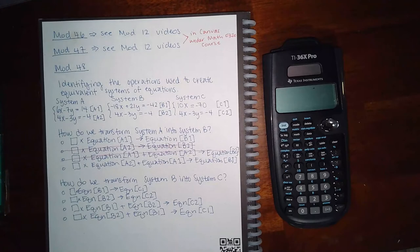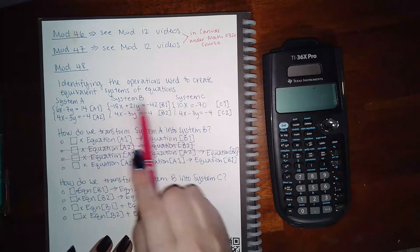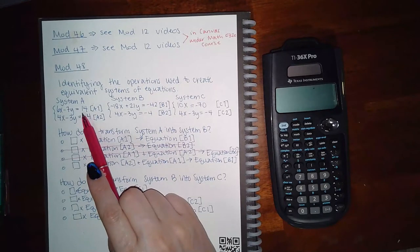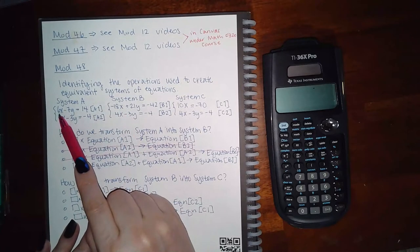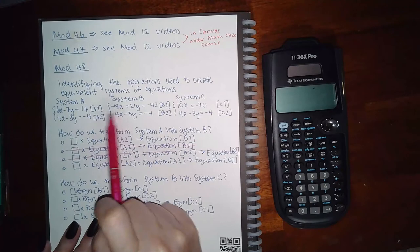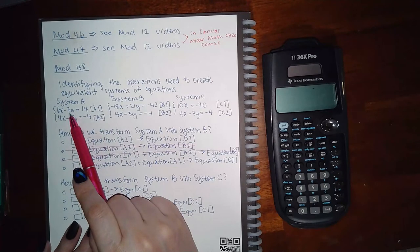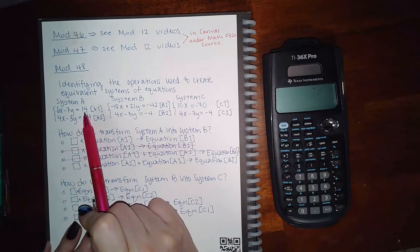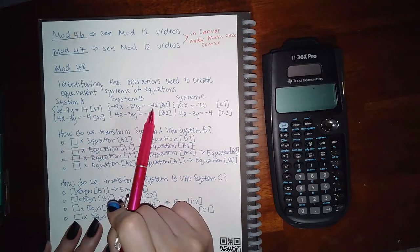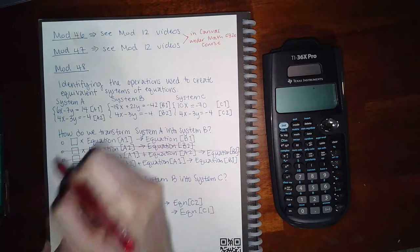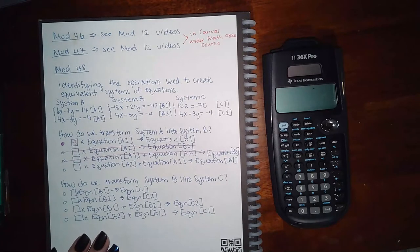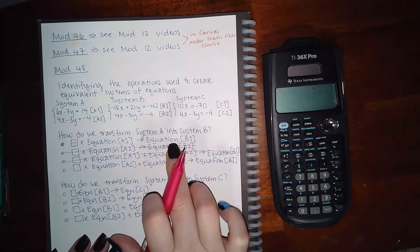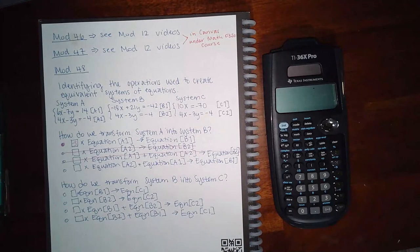Looking at A1 and B1 to see what changed: if I multiply 6 by negative 3 I get negative 18, multiply negative 7 by negative 3 I get positive 21, and multiply 14 by negative 3 I get negative 42. So they multiplied A1 by negative 3 and that result was placed into B1.